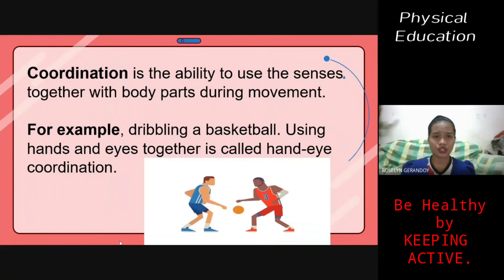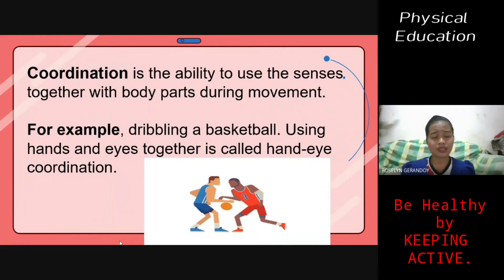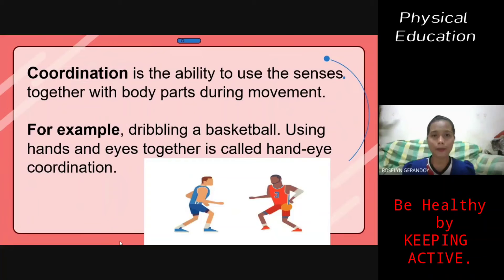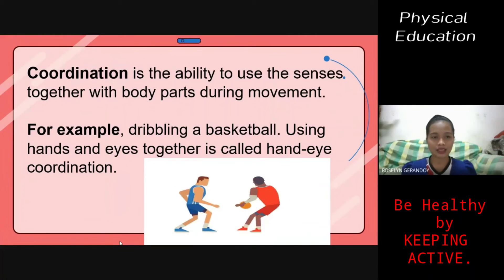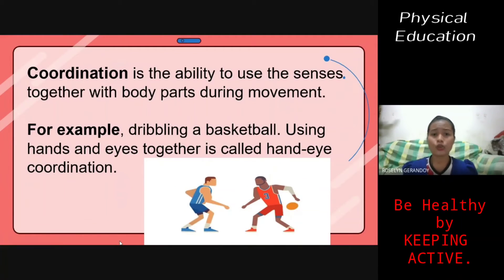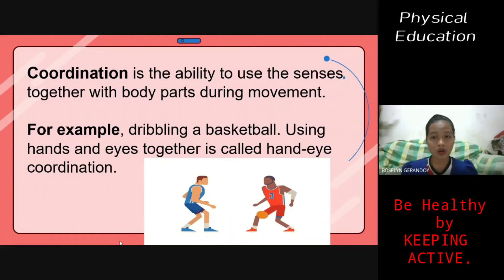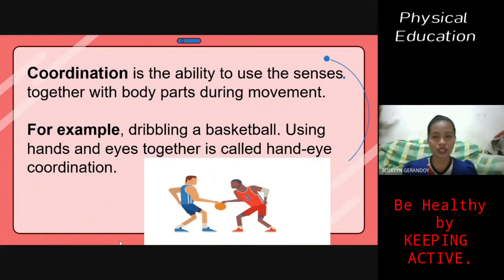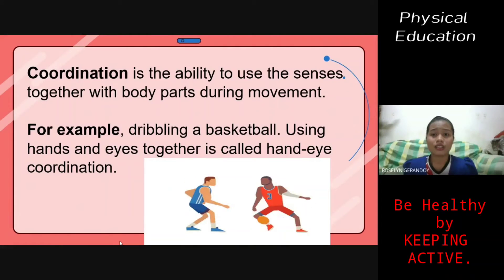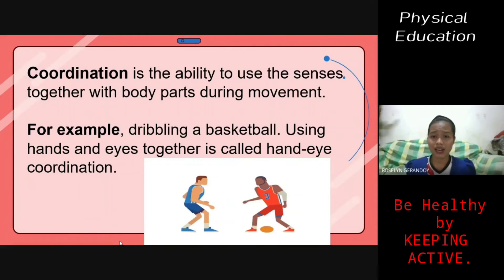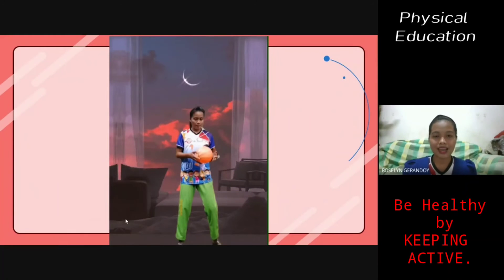Coordination is the ability to use the senses together with body parts during movement. For example, dribbling a basketball — you are using your hands and eyes together, which is called hand-eye coordination. You are using your senses together with your hands and eyes in order to move the ball.